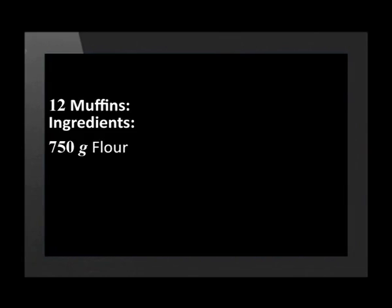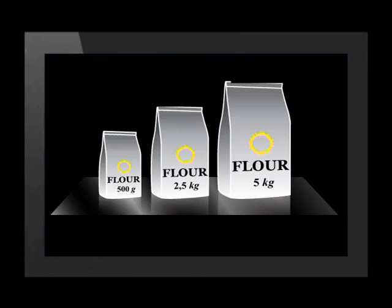It looks like Tandi and Lebuhang will be cooking all afternoon. Now let's look at how to calculate the cost of the ingredients used in a muffin recipe. The recipe will make 12 muffins and uses flour, eggs, milk and sugar. For this exercise, we'll focus on the price of the flour. Flour is sold in three different masses: 500 grams, 2.5 kilograms and 5 kilograms. It's obvious that the 500 gram bag costs the least, but which bag works out to be the cheapest way to buy flour? We must calculate this by determining the price per kilogram.